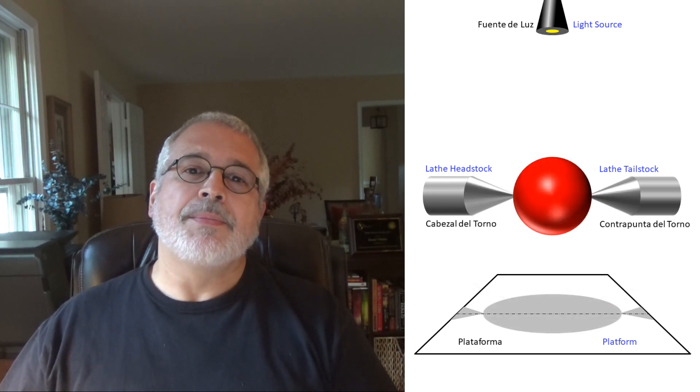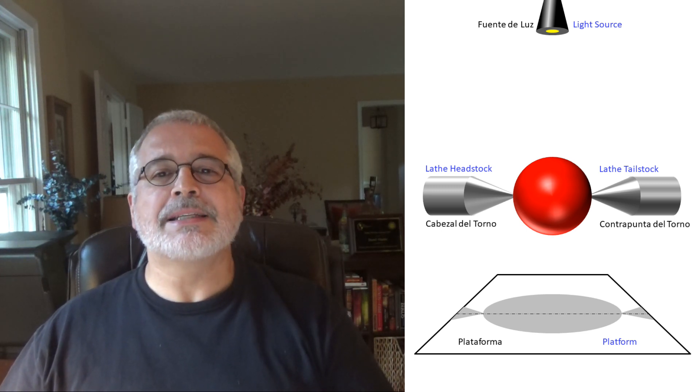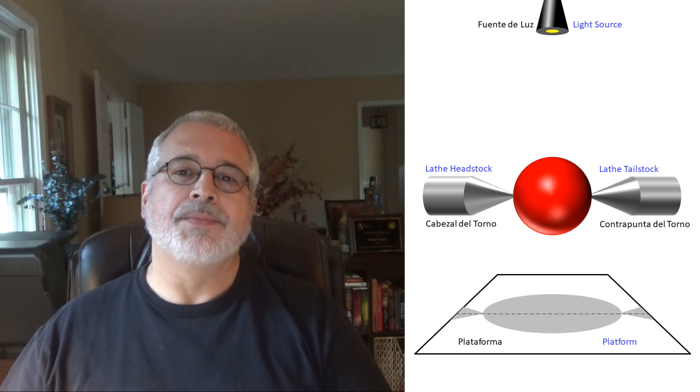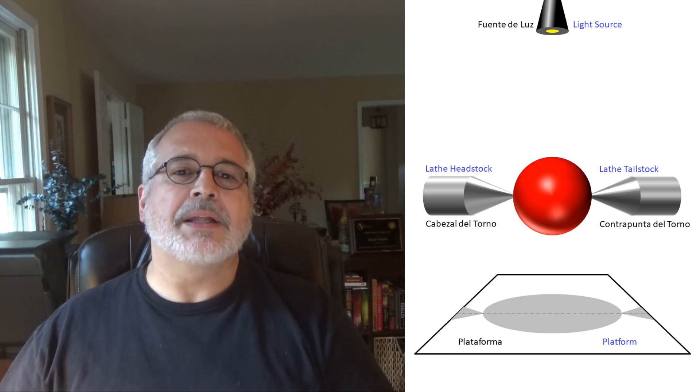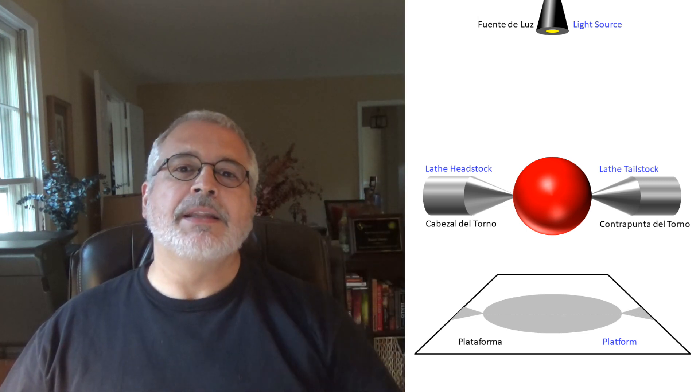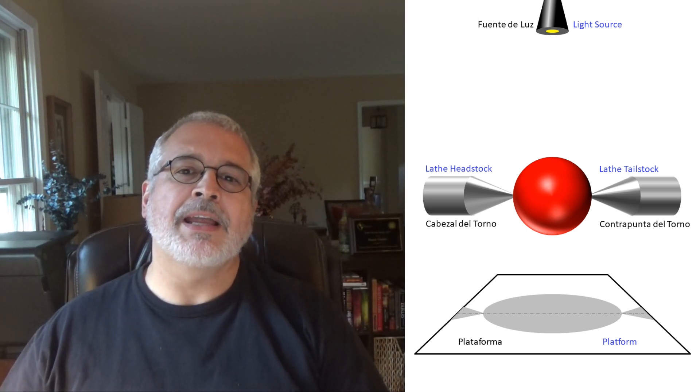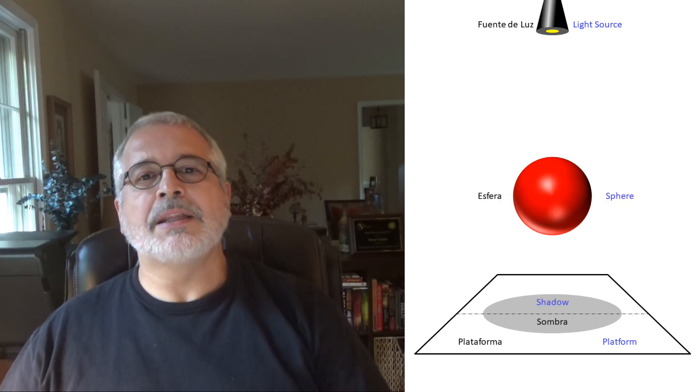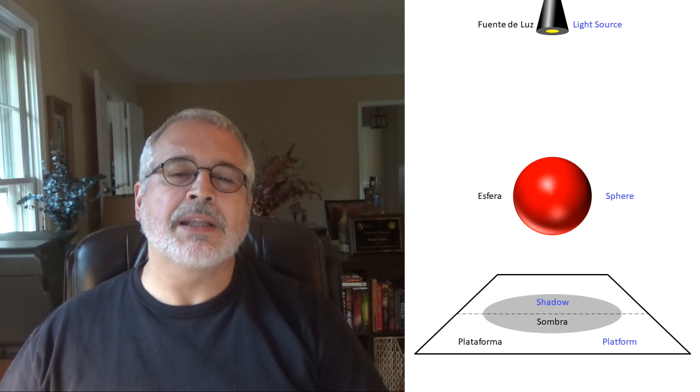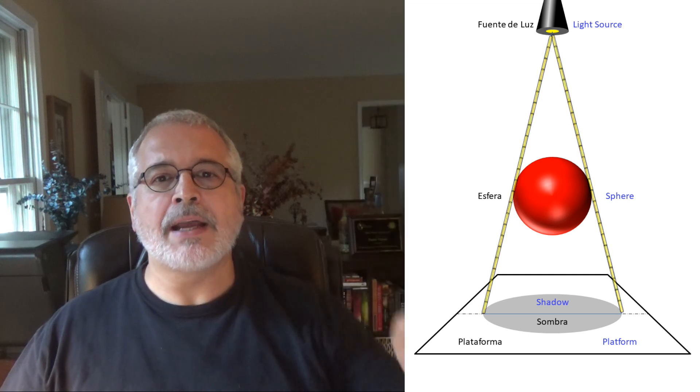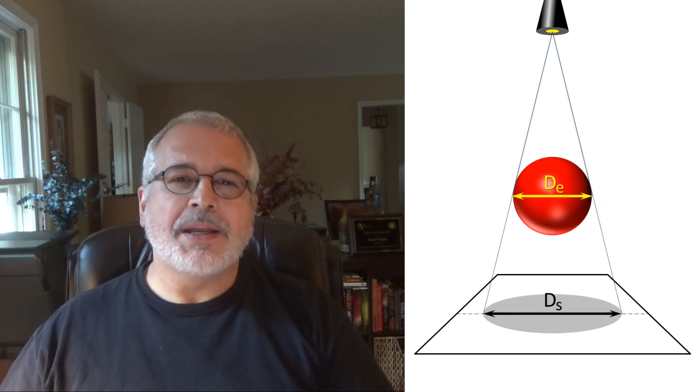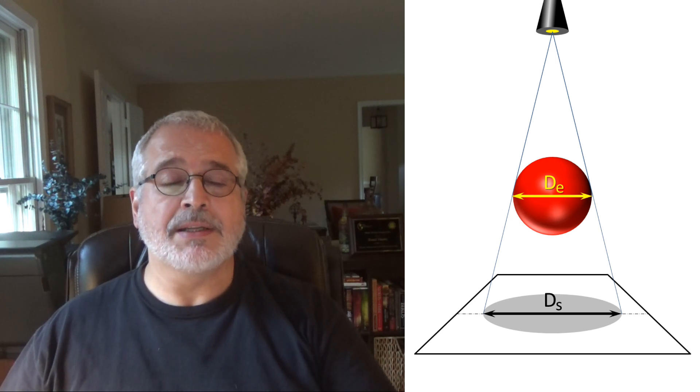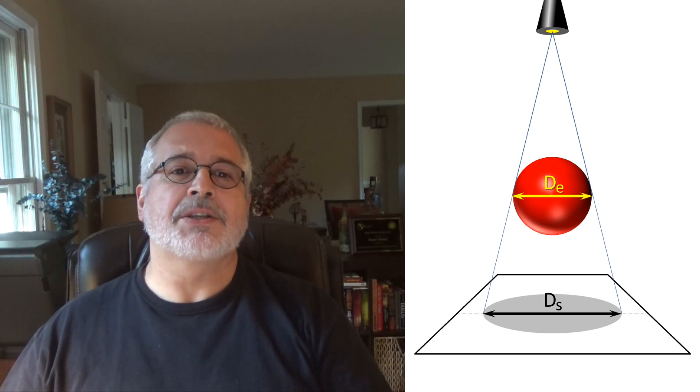In this slide I have in red an already turned sphere and we can see over the platform the shadow of that sphere. For the effect of this demonstration I have exaggerated substantially the dimensions of the distortion so that it can be noticed well, but typically the source of light will be further up and the difference between the shadow and the actual sphere diameters will not be as large. For more clarity in this slide I have removed the spur center and the live center and I am going to trace beams of light that will pass tangent to the sphere and project its shadow over the platform. Here you can appreciate that the diameter of the sphere is DE and the diameter of the projected shadow is DS.